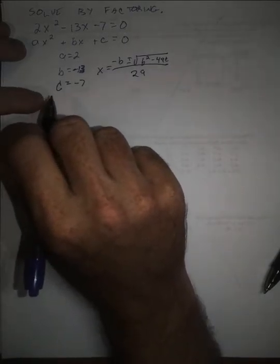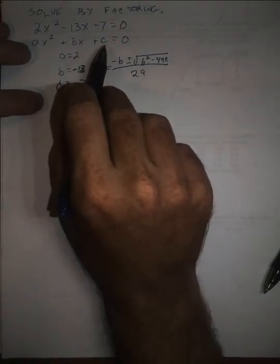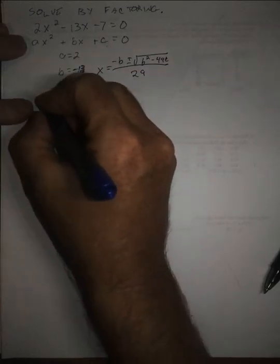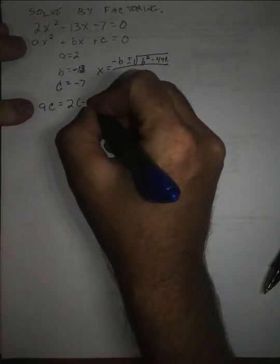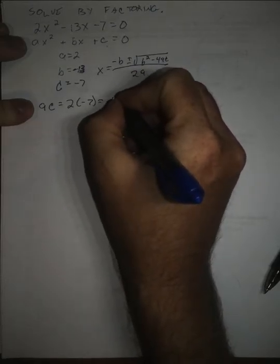Now when we're using the AC method, we're talking about the same letters. In this case, ac is 2 times negative 7, which is negative 14.